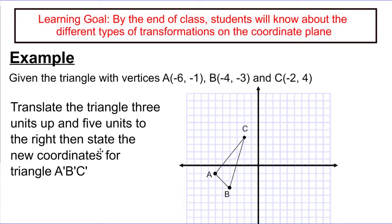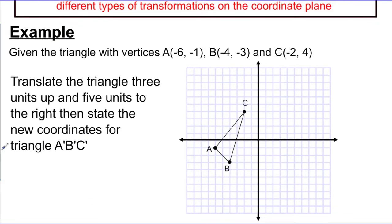So we're going to take a look at a simple example. I'm given a triangle ABC, and they've noted the vertices for us. Just to save a little bit of time, I pre-graphed ABC, but you may very well be asked to graph ABC on your own. So our job here, it says to translate the triangle three units up and five units to the right, and then to state the new coordinates of A prime, B prime, C prime, which remember, that is just the new image after the transformation.